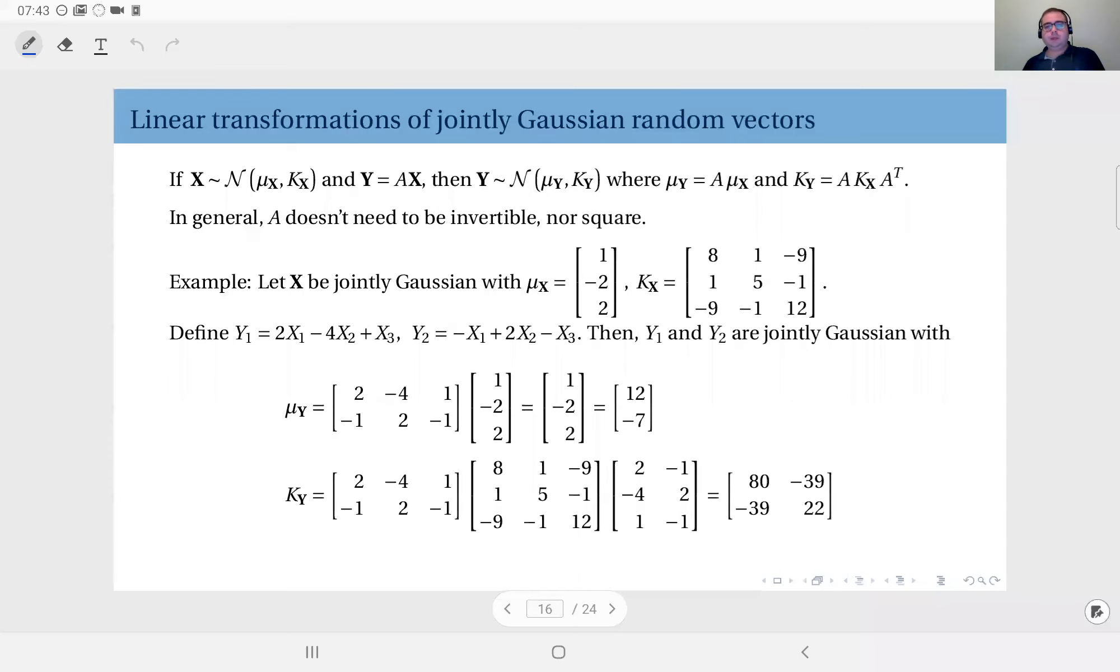Here's an example. Let's say we have a random vector X which is jointly Gaussian and we have its mean vector and covariance matrix. The mean vector is given here, covariance matrix is given here, and we define new random variables Y1 and Y2.